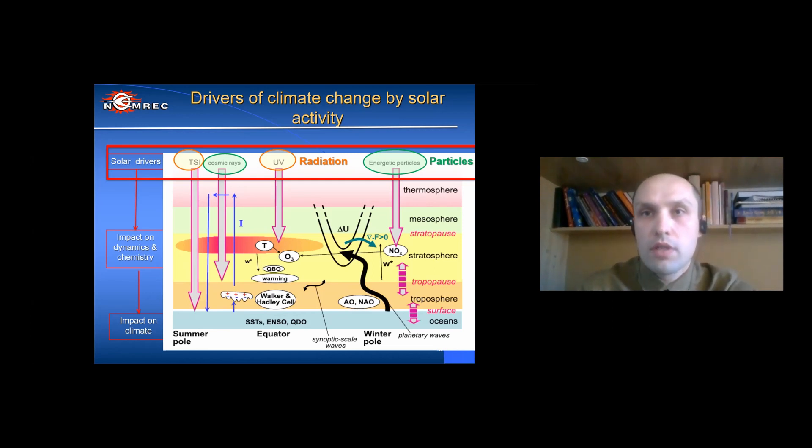And finally, mechanisms of variation in galactic cosmic rays to climate change. Galactic cosmic rays are caused by supernova explosions. These rays affect the development of cloudiness in the lower atmosphere.